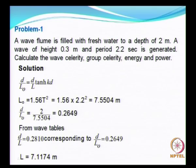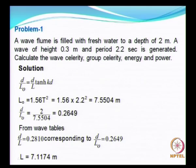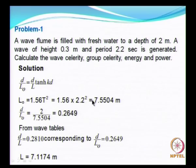The first step would be to determine the wave length. We have already seen this relationship: d/L₀ and d/L, which is going to be an implicit equation that we need to solve. The first step is to determine L₀, which we know is 1.56 × T². Doing that, we get 7.55 meters as the deep water wave length. Then we calculate d/L₀, and for the present problem it comes to 0.26.